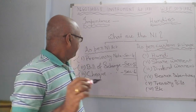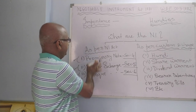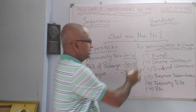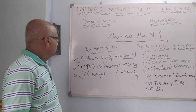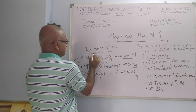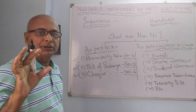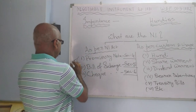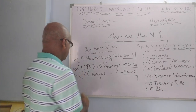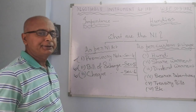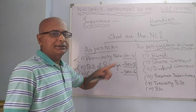For today, we will discuss the first part — as per the act — and the second part will need another class. As per the act, there are three types of negotiable instruments: promissory note, bill of exchange, and cheque — under Sections 4, 5, and 6 respectively.